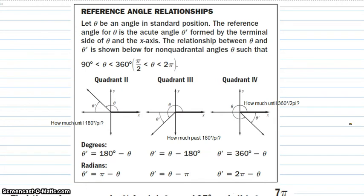Now for some of you, you may just like the mathematical version, the 180 minus θ, or θ minus 180, 360 minus θ. I like to think about it as how much until 180 or π, how much past 180 or π, and then how much until 360 or 2π.